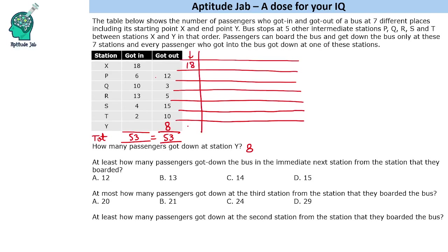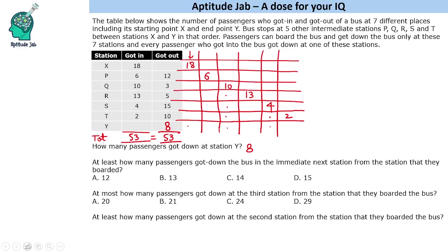Similarly, at the second station, 6 people got in so that total must be 6. At the next station, 10 people got in so that total must be 10. Then 13 people got in at the following station, then 4 people, and at the last station 2 people got in.